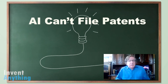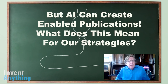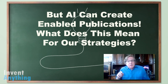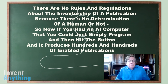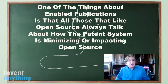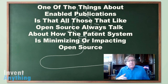Think about this: there are no rules about the inventorship of a publication. So Dr. Taylor's AI inventions could actually be published as Enabled Publications, because there's no requirement of a human inventor. If you had an AI computer that you could program and hit a button, it could produce hundreds and hundreds of Enabled Publications. Those who advocate for open source have always talked about how the patent system impacts open source — well, using Enabled Publications for open source is the way to go, because you can use the law to your advantage by publishing inventions so nobody else can get a patent on them.